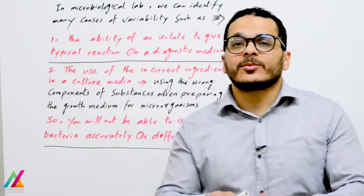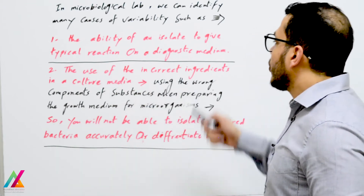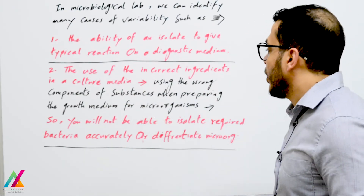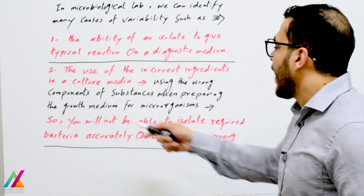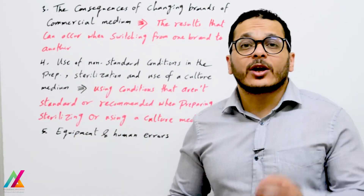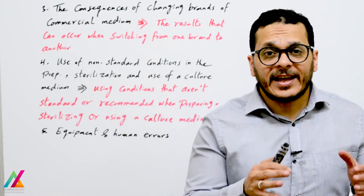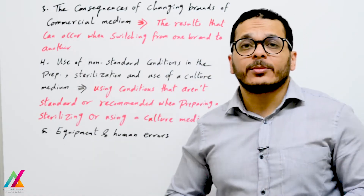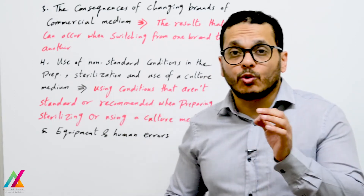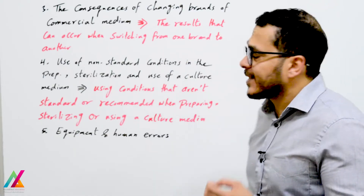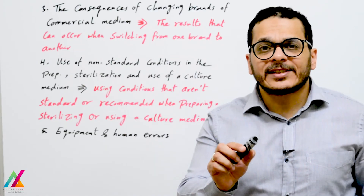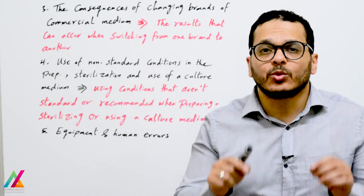Another source is the use of incorrect ingredients in a culture media — using the wrong components when preparing the growth medium — which means you will not be able to isolate or differentiate the target bacteria accurately. Also, changing brands of commercial media is a source of uncertainty: switching from one brand to another may affect results, and performance of the new media must be controlled and verified.